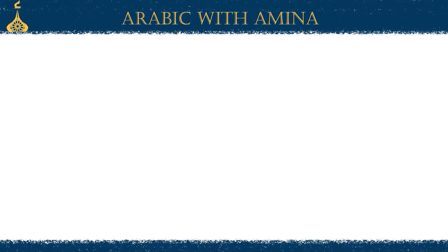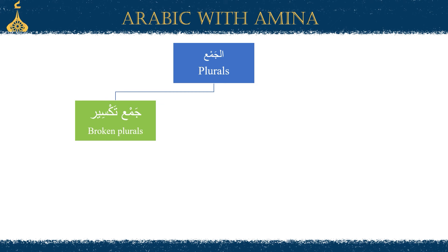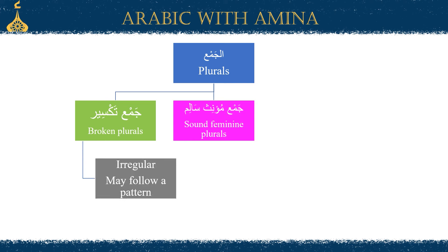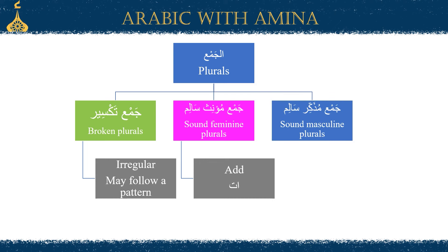Now to summarize what we learned in this video: we were learning about plurals in Arabic, and we know there are three types. There is jama' taksir, the broken plurals — these words are irregular. The second type is jama' mu'annath salim, the sound feminine plurals, which follow a rule where we add alif ta to the end of the word. The third type is jama' mudhakkar salim, the sound masculine plurals, which follow a rule where we add waw nun or ya nun to the end of the word.